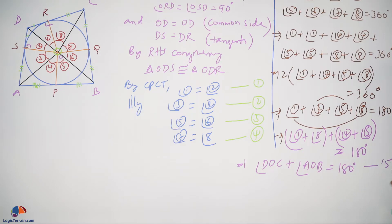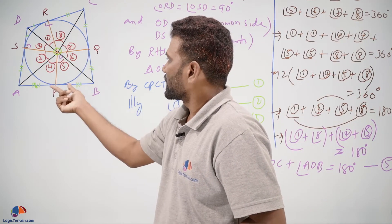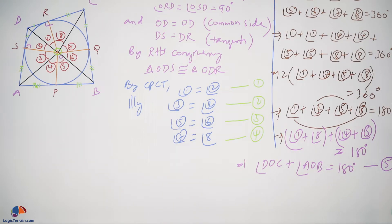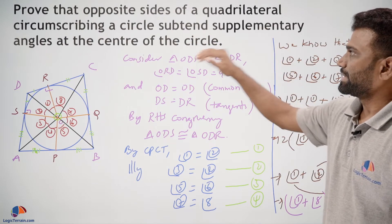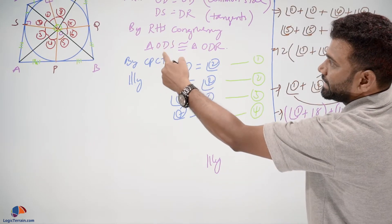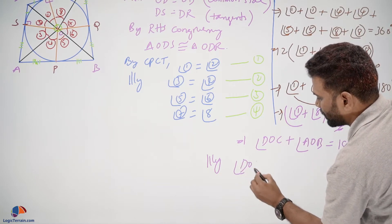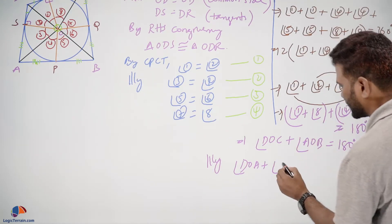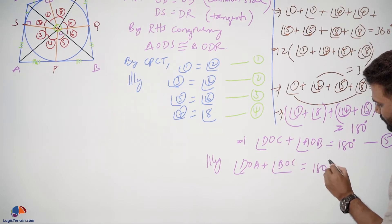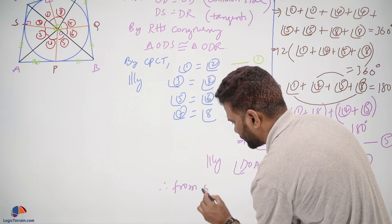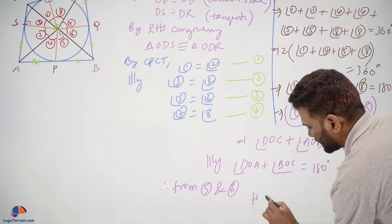Let us call this equation 5. From equation 5, we can say that these two opposite sides are subtending supplementary angles at the center of the circle. Similarly, angle DOA plus angle BOC also equals 180 degrees — let this be equation 6. Therefore, from equations 5 and 6, hence the proof.